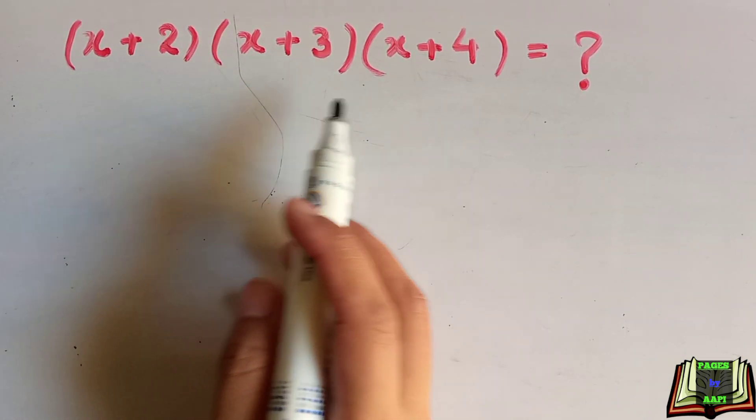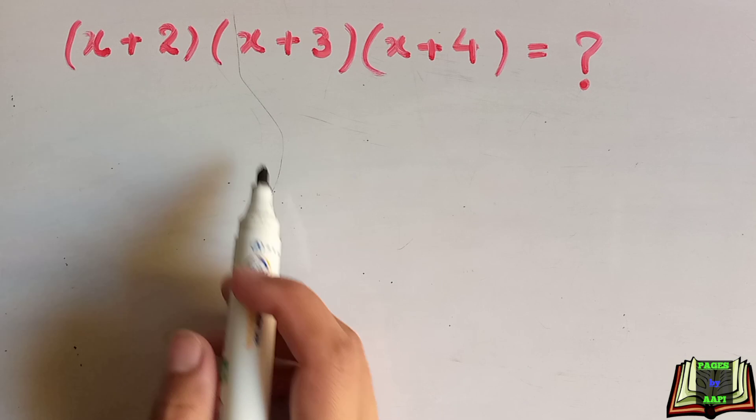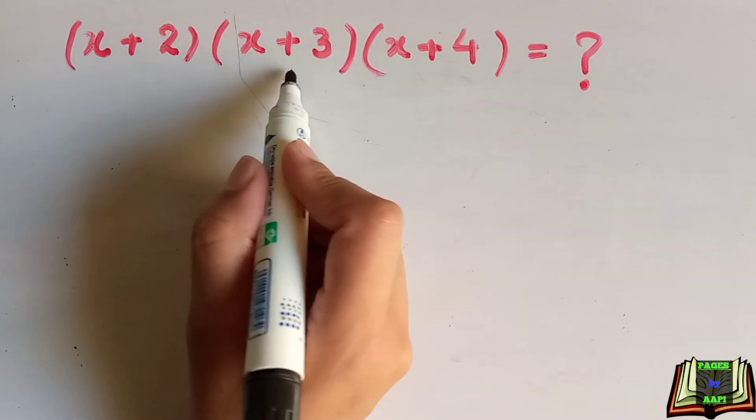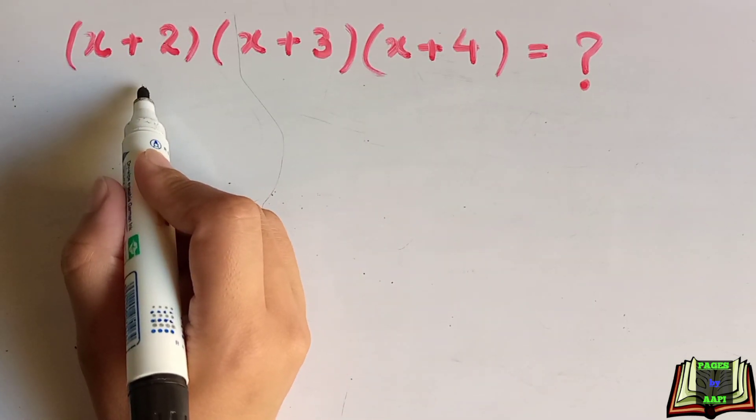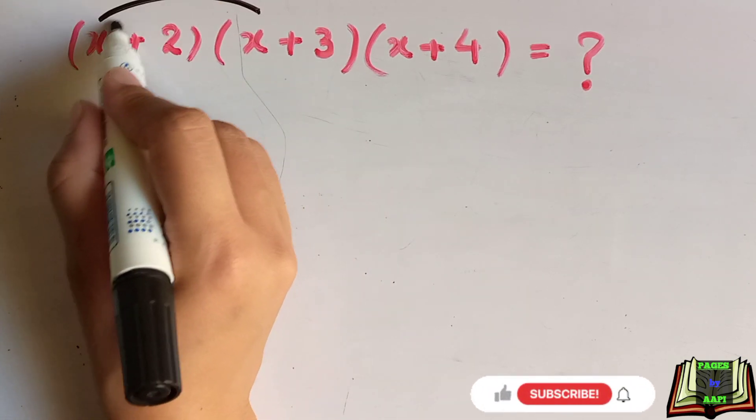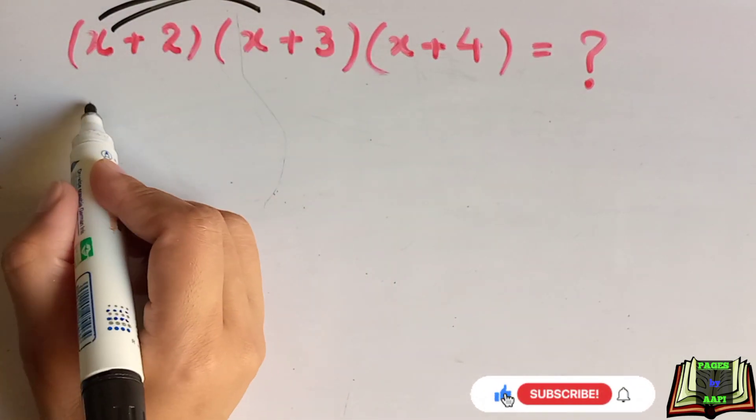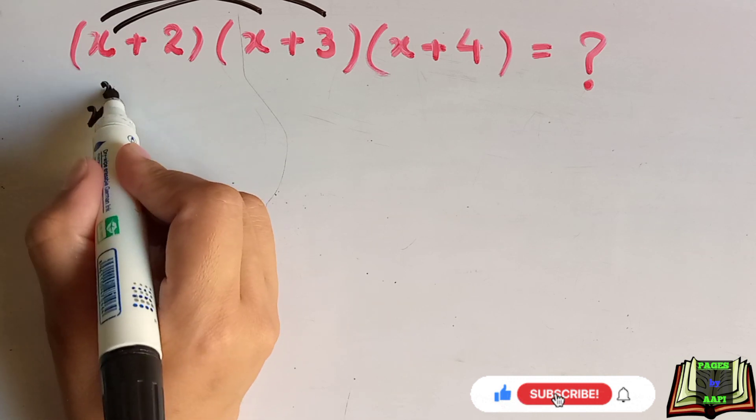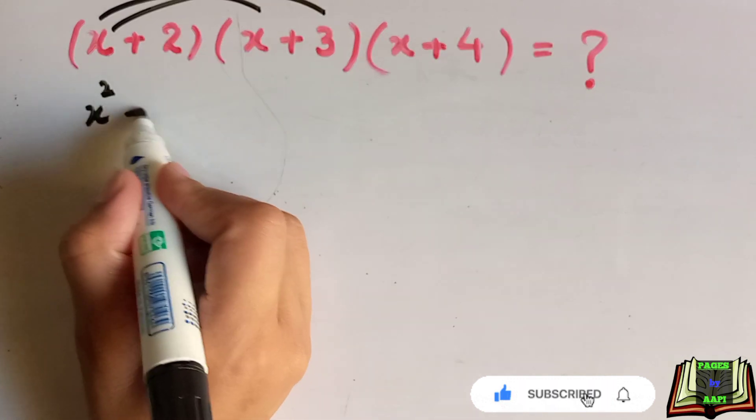Here is the question: x plus 2 into x plus 3 into x plus 4. We will multiply these two terms first, x plus 2 into x plus 3, like x into x and x into 3. x into x is x square and 3 into x is 3x.